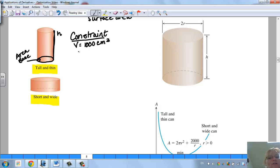The formula for the volume is going to be pi r squared h, because there's our circle times the height, and we know it has to equal 1,000. So there's our constraint.